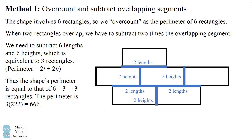Ultimately, the shape's perimeter is equal to that of six rectangles minus three rectangles, which equals three rectangles. Thus, the perimeter is three times 222, which is 666. This is one way to get the answer.